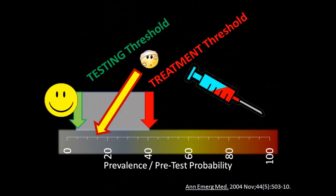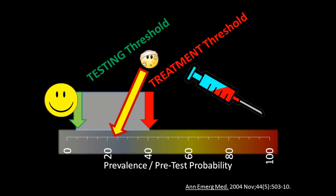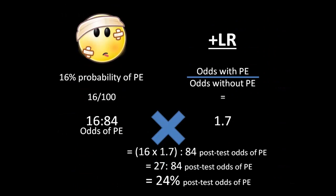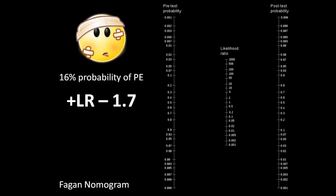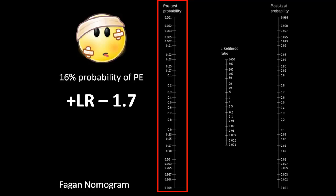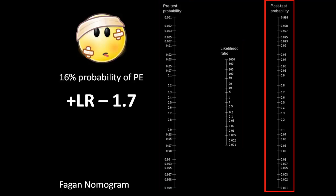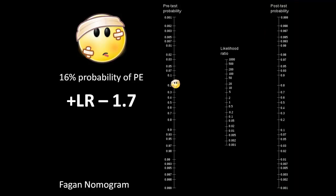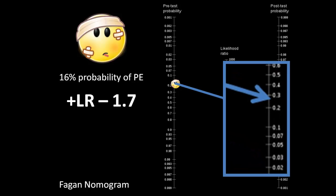We've moved from a 15% pre-test probability to a 24% post-test probability, and we still don't know if we should treat Bob or send him home. It was also kind of a pain to go through all those calculations. Luckily, TJ Fagan invented a device called a nomogram, which can help take us from pre-test to post-test probability. Column one shows pre-test probability, the middle column has likelihood ratios, and on the right we have post-test probability. Bob's pre-test probability is 0.16. The positive likelihood ratio of a D-dimer is 1.7, and if we draw a straight line, we get to a post-test probability somewhere between 20 and 30%.